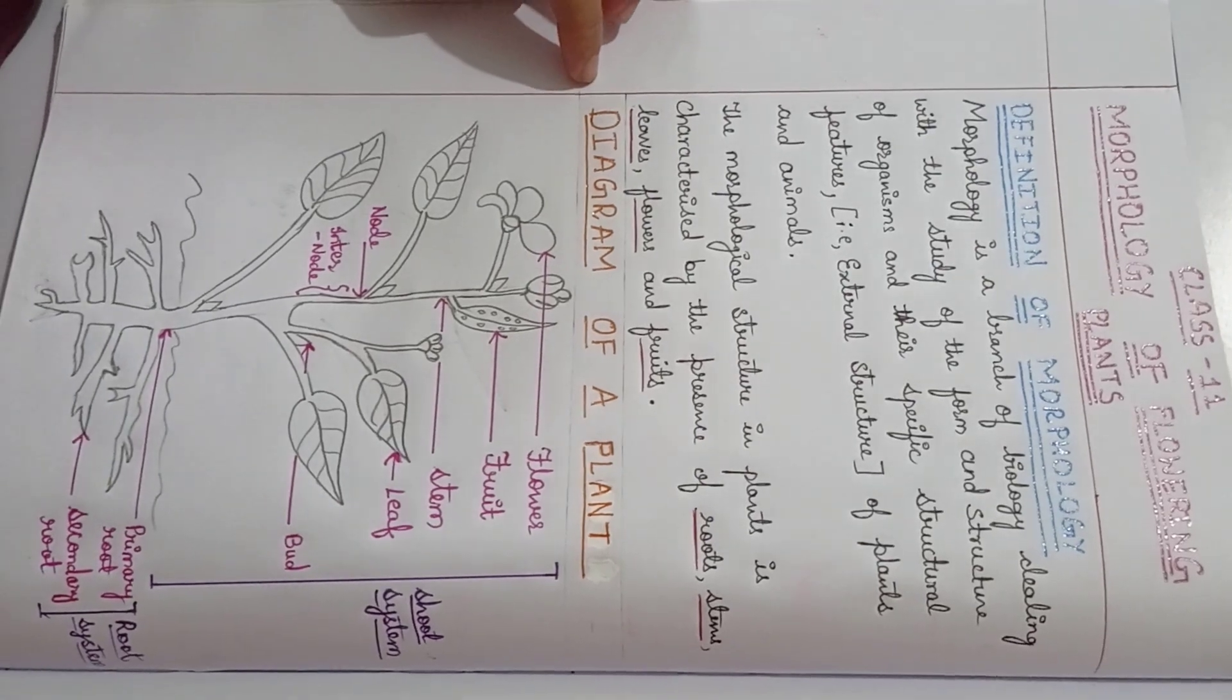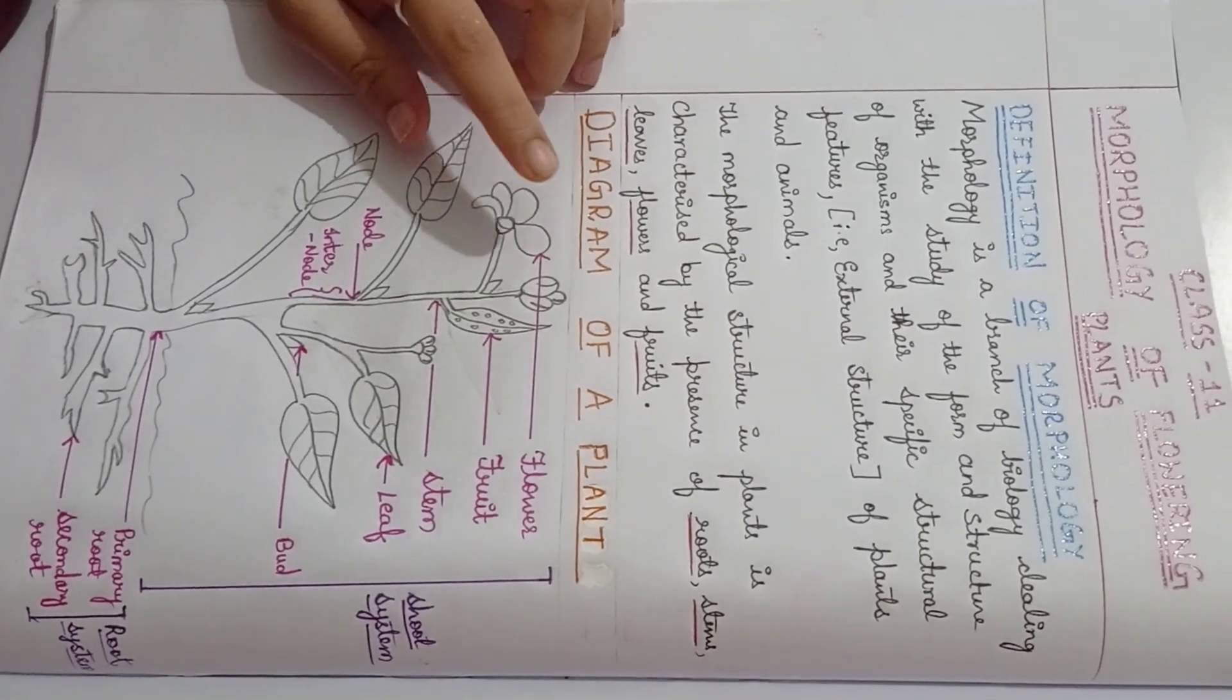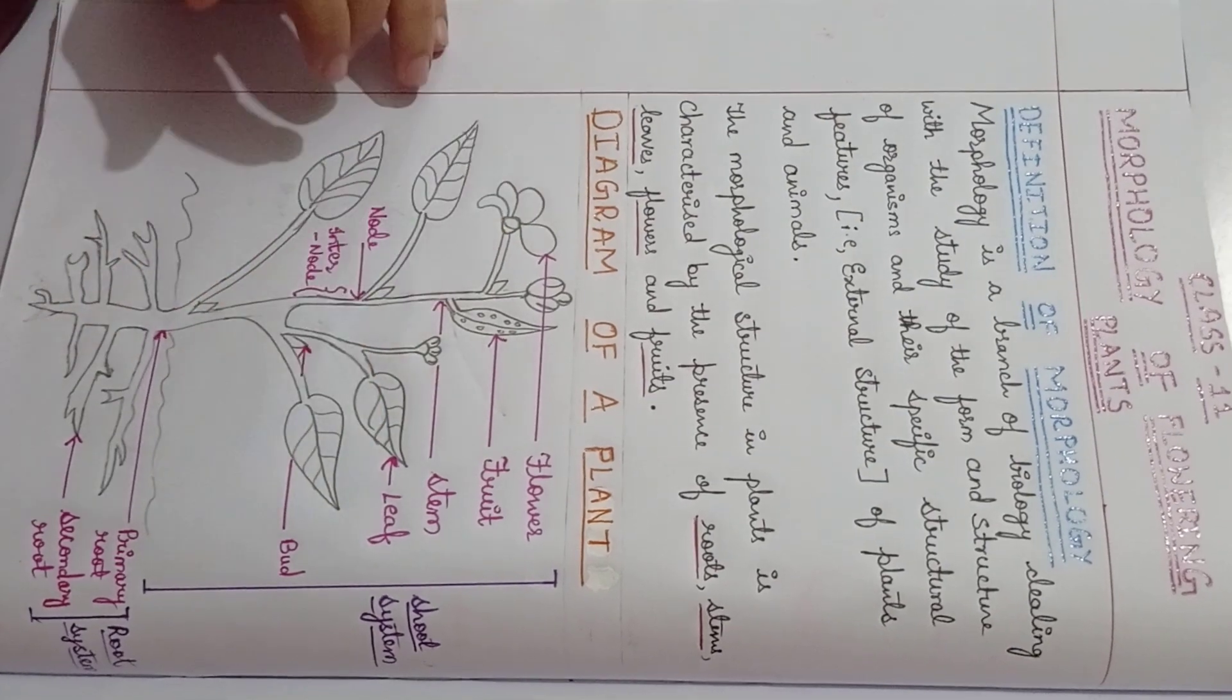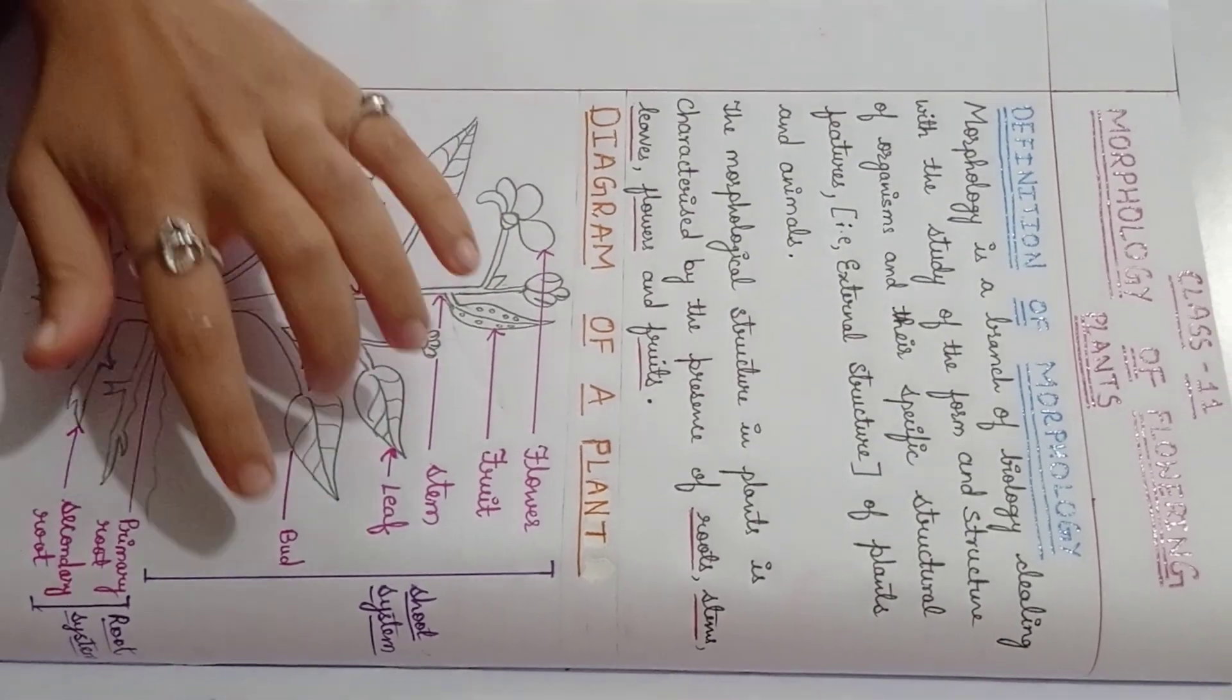We will see in the diagram of a plant, there is labeling of a flower, fruit, stem, leaf, node, internode, and a bud.